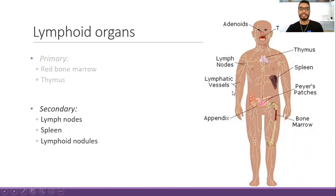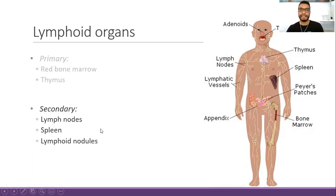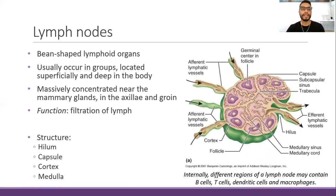The secondary lymphoid organs include lymph nodes. We have lymph nodes everywhere in our body; they are mainly located in the axilla, in the cervical area, and in the groin area as well. We also have the spleen and lymphoid nodules, which are considered masses of lymphoid tissue that also have immune response. The lymph nodes have the shape and size of a bean, approximately 2.5 centimeters.